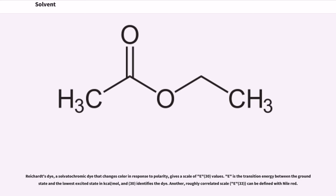Reichardt's dye, a solvatochromic dye that changes color in response to polarity, gives a scale of ET(30) values. ET is the transition energy between the ground state and the lowest excited state in kcal per mole, and 30 identifies the dye.